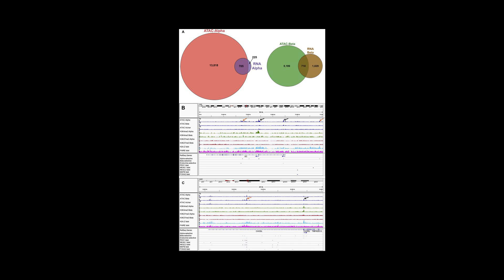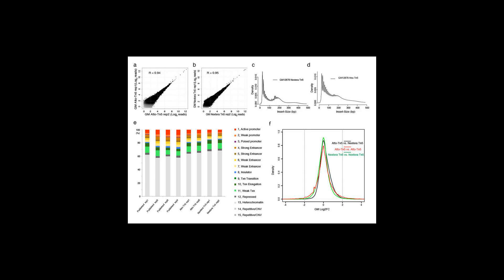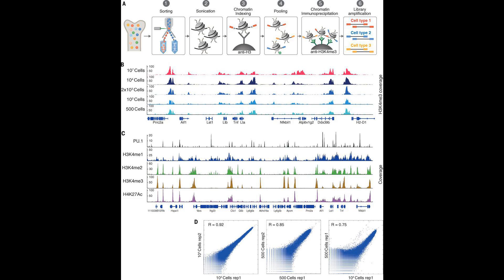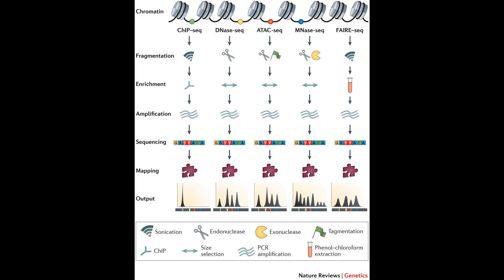ATAC-SEQ employs a mutated hyperactive transposase. The high activity allows for highly efficient cutting of exposed DNA and simultaneous ligation of specific sequences called adaptors. Adaptor-ligated DNA fragments are then isolated, amplified by PCR, and used for next-generation sequencing.